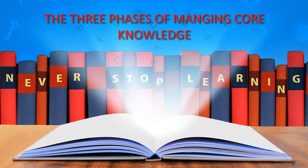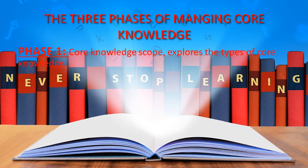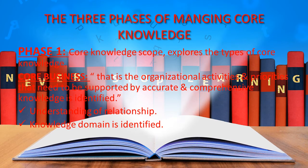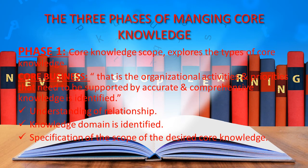Clarifying the core knowledge scope explores the types of knowledge and the way they are used in the organization. Three aspects of organizational activities are examined. First, the core business — organizational activities and priorities that need to be supported by accurate and comprehensive knowledge — is identified. An understanding of the relationship between available knowledge and core business is an important basis for subsequent content management. Secondly, the knowledge domain is identified in terms of business areas which are supported and actively encouraged. Third, the capacity of staff to share and generate that knowledge is reviewed.